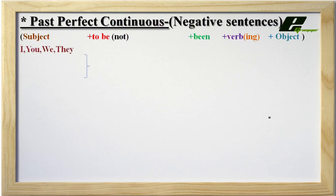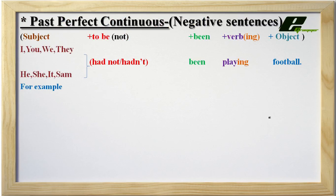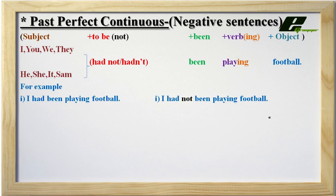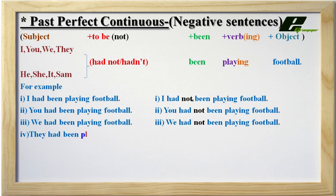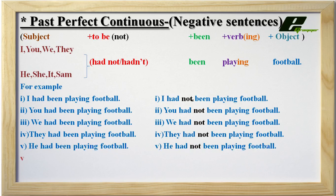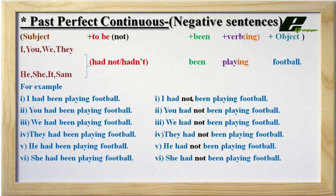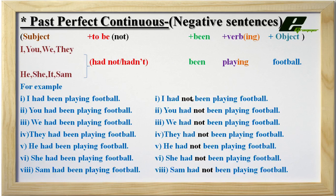We will convert some sentences into negative sentences. I had been playing football → I had not been playing football. You had been playing football → You had not been playing football. We had been playing football → We had not been playing football. They had been playing football → They had not been playing football. He had been playing football → He had not been playing football. She had been playing football → She had not been playing football. Sam had been playing football → Sam had not been playing football.